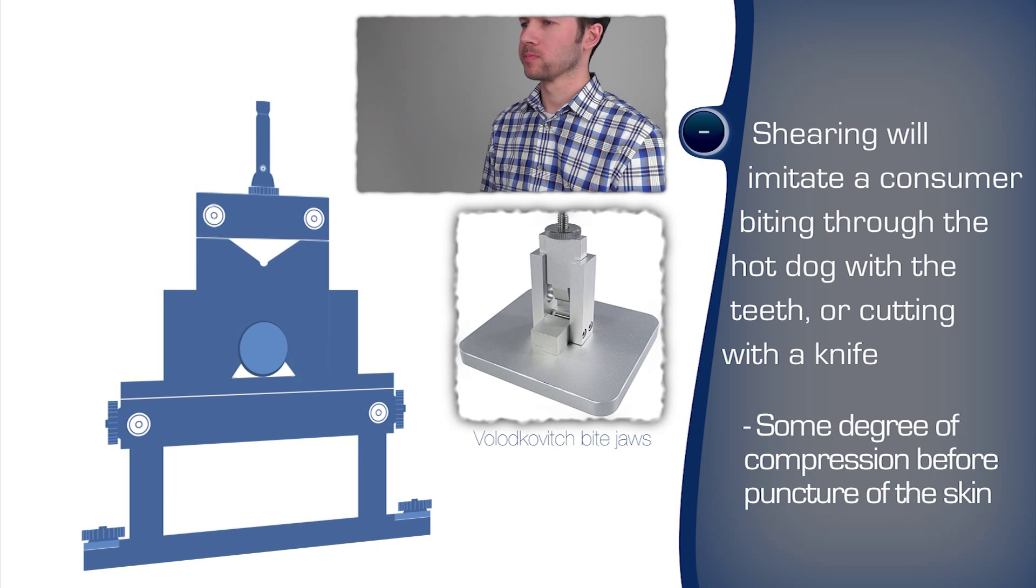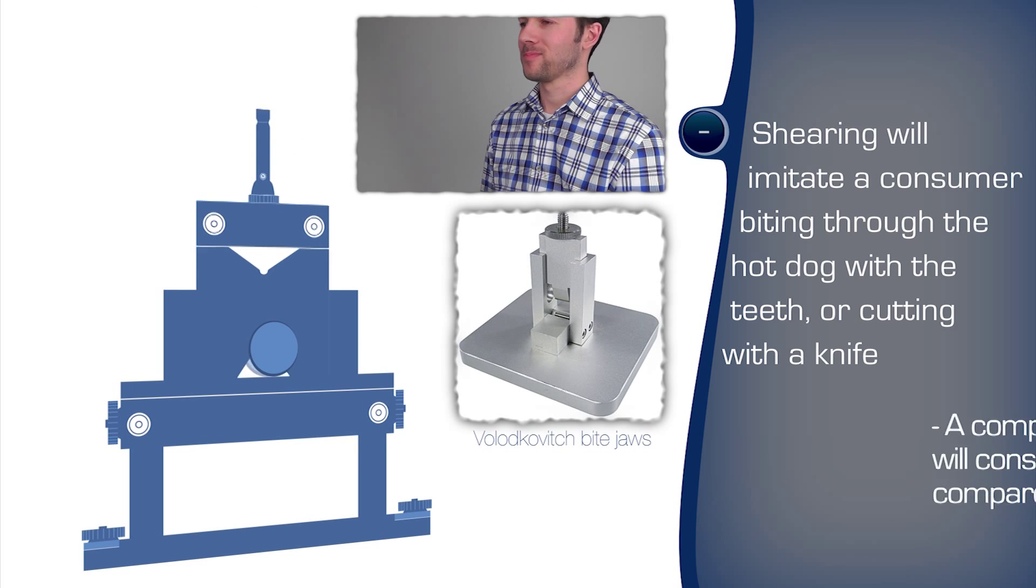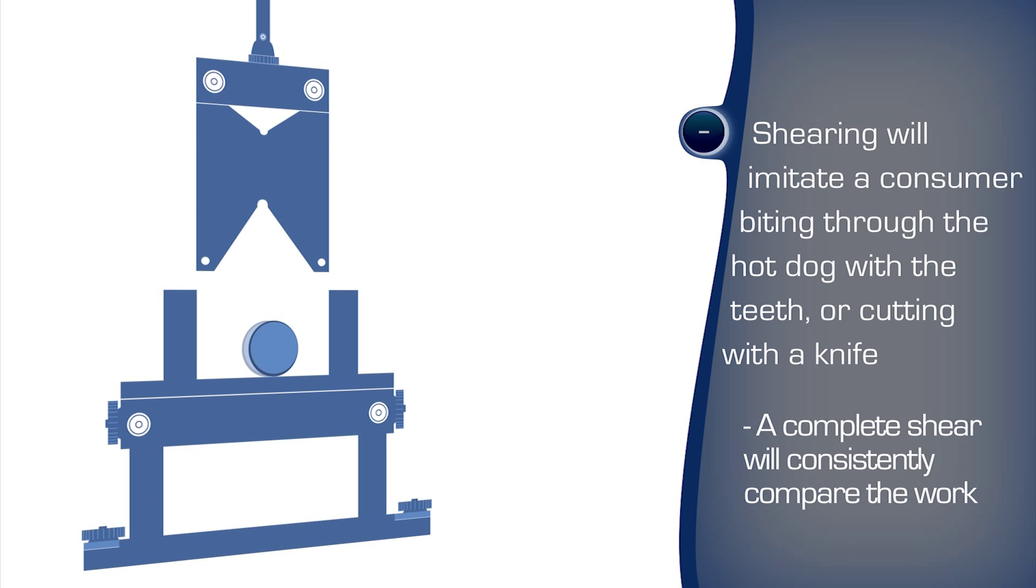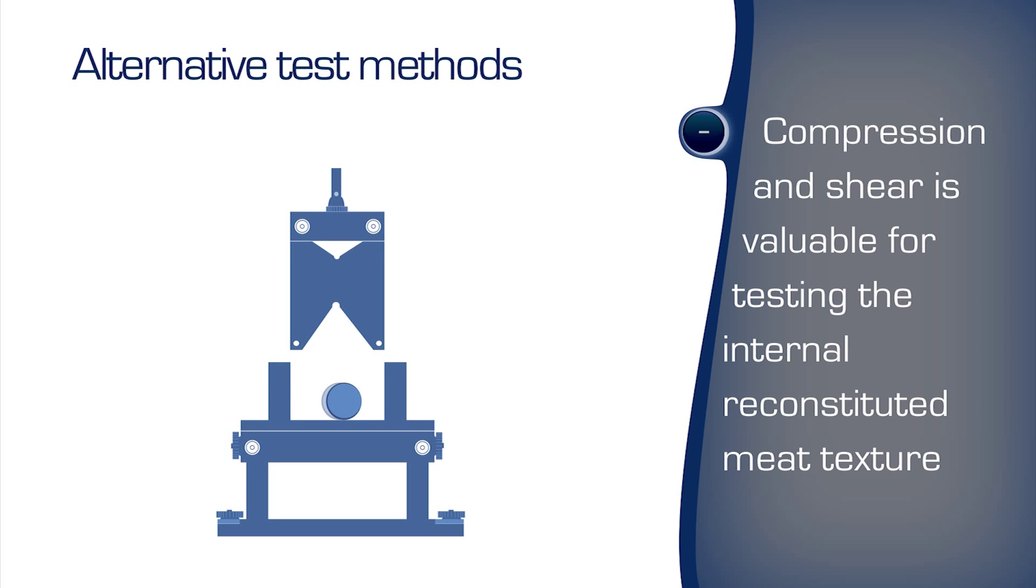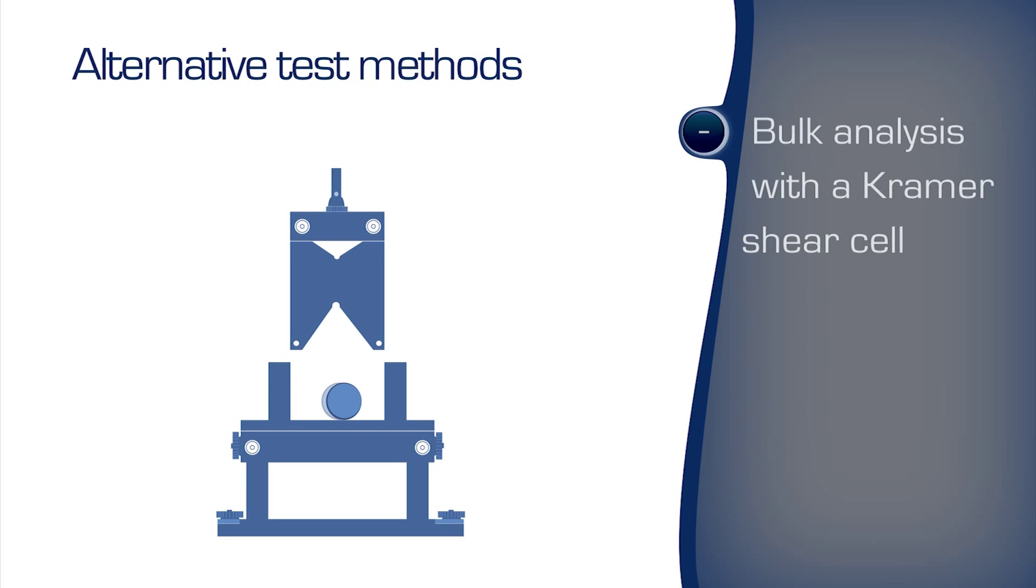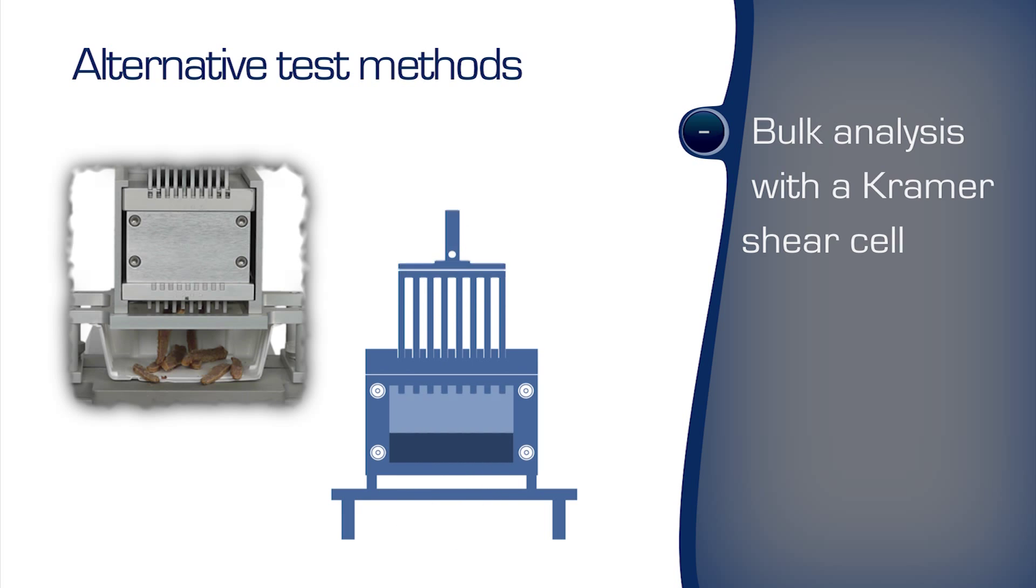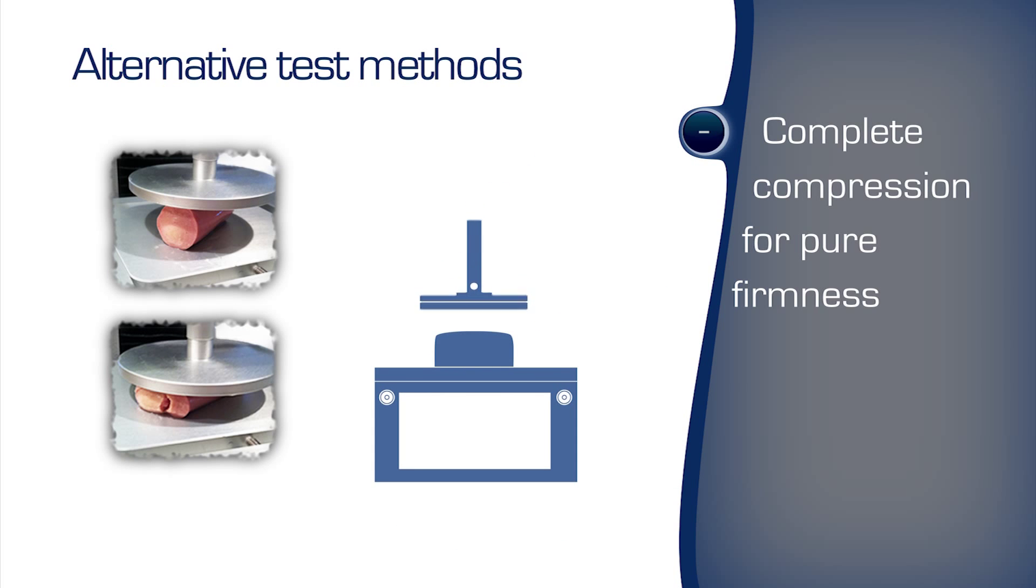Shear is the representative method for the simulation of a consumer cutting, slicing or carving the meat and biting. Alternative test methods can also be invaluable in fully evaluating the texture of meat and meat-like products.